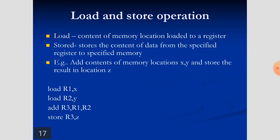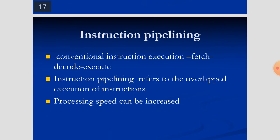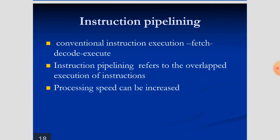A simple example of load/store operations: LOAD R1, X; LOAD R2, Y; ADD R3, R1, R2; STORE R3, Z. Here X and Y are memory locations and the result is stored in Z. LOAD tells the CPU to load the content of memory location into a register; ADD performs the addition; STORE writes the result back to memory. Instruction pipelining in conventional execution involves fetch, decode, execute — by pipelining, more than one instruction can be processed at a time, increasing execution speed.